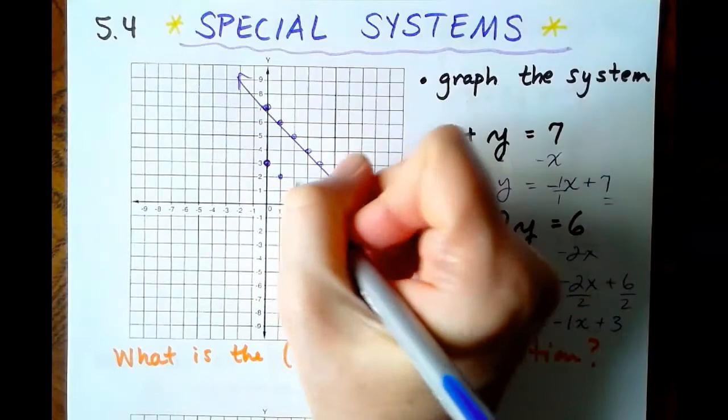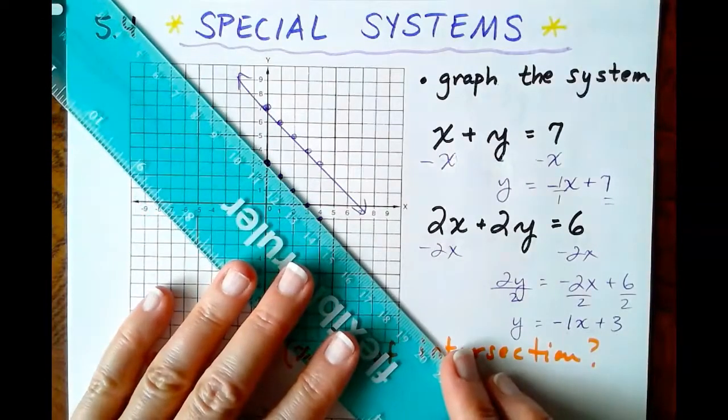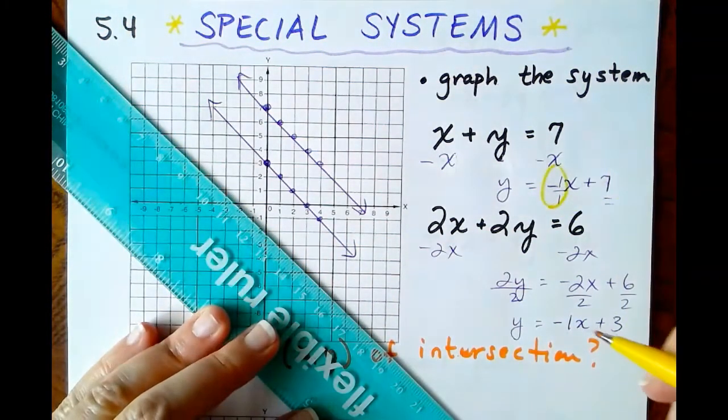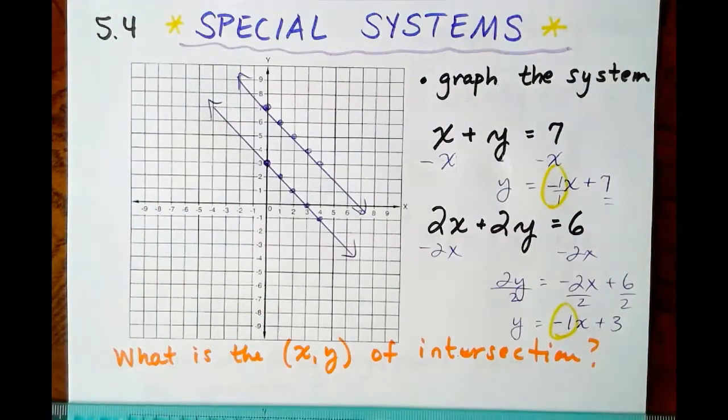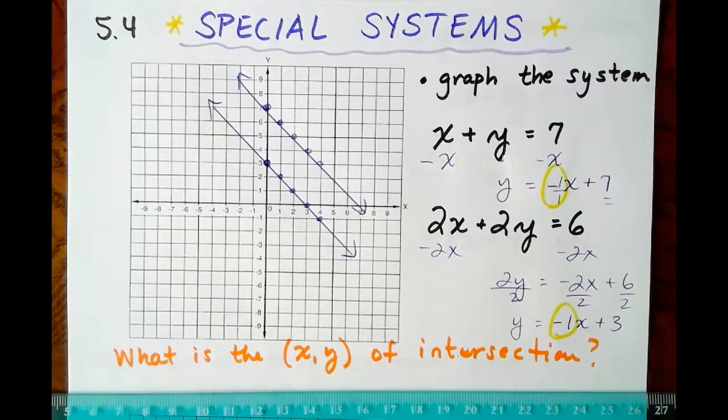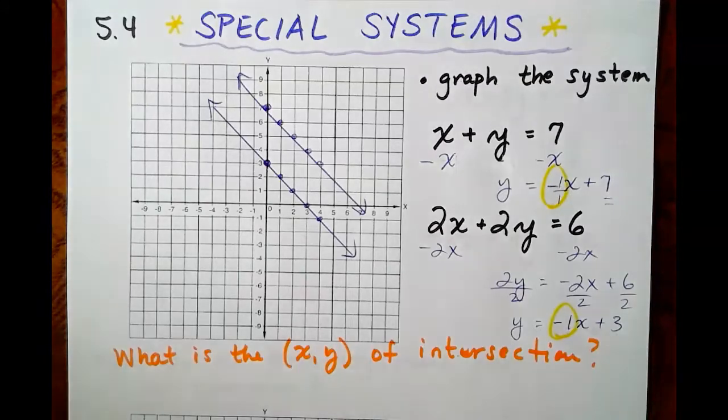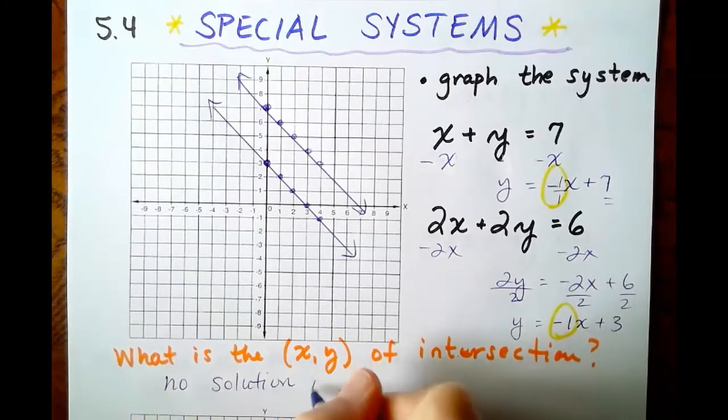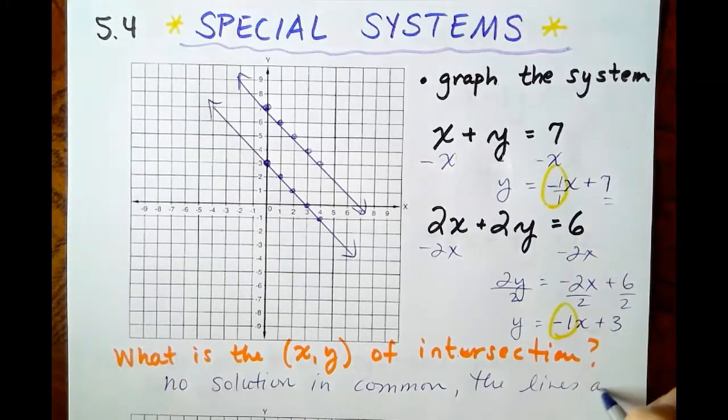And a slope of negative 1. Now, if you recall from our last section in the previous chapter, we've got parallel lines here. The way that we know they are parallel is because they both have a slope of negative 1. So when we come to answer this question at the bottom, what is the point of intersection? Well, there is no point of intersection because the lines are parallel. So we would say that this system has no solution in common. The lines are parallel.